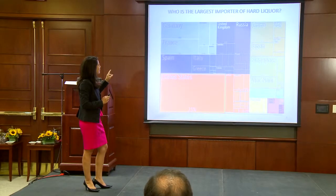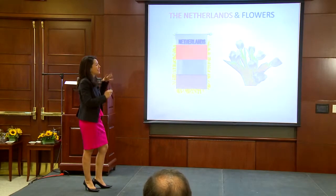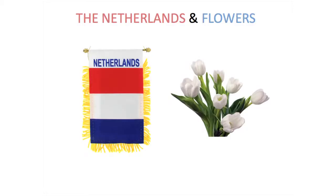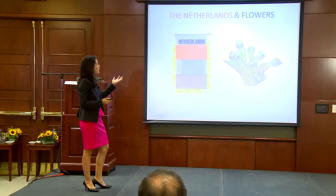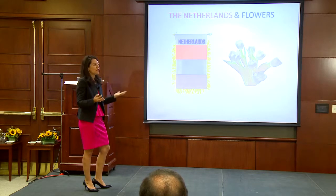We can also see things that are dynamic. You can see an industry and how it evolves and have hypotheses about it. For example, the flower industry in the Netherlands.